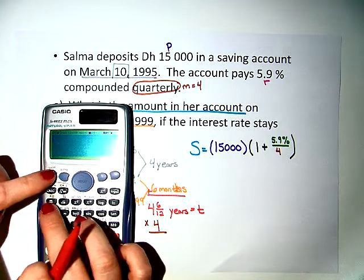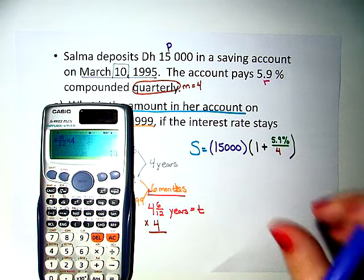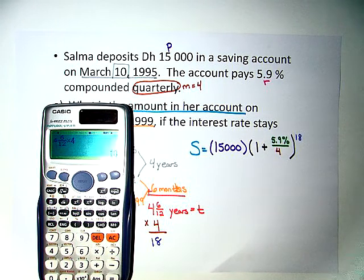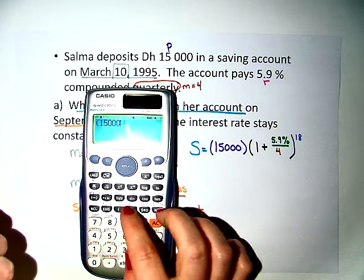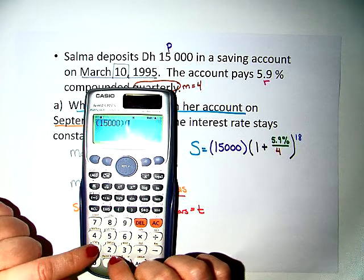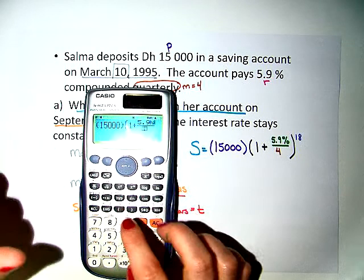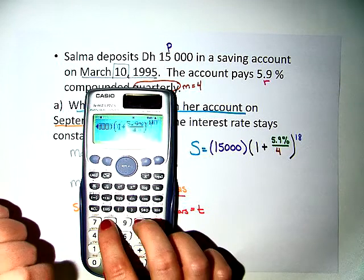To enter the mixed number, hit shift fraction: 4 and 6 twelfths, multiplied by 4. We get that our exponent value is going to be 18. So being very careful when we put it in the calculator: 15,000 times 1 plus — as a fraction — 5.9% over 4, close parentheses, raised to the 18th power.